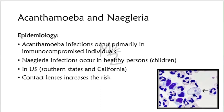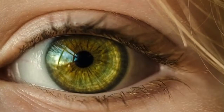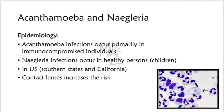Epidemiology: Acanthamoeba infections occur primarily in immunocompromised individuals, whereas Naegleria infections occur in healthy persons, usually children. In the United States, these rare infections occur mainly in southern states and California. Contact lenses increase the risk. Amoebas have been recovered from contact lenses, lens cases, and lens disinfectant solutions. Tap water contaminated with amoebas is a source of infection for lens users.